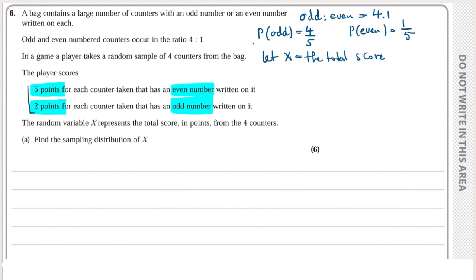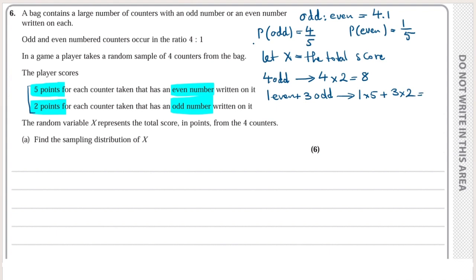We find the possible values for X. With four counters, the options are: all four odd counters, giving a total score of 4×2 = 8; or one even counter plus three odd counters, giving 1×5 + 3×2 = 5 + 6 = 11.